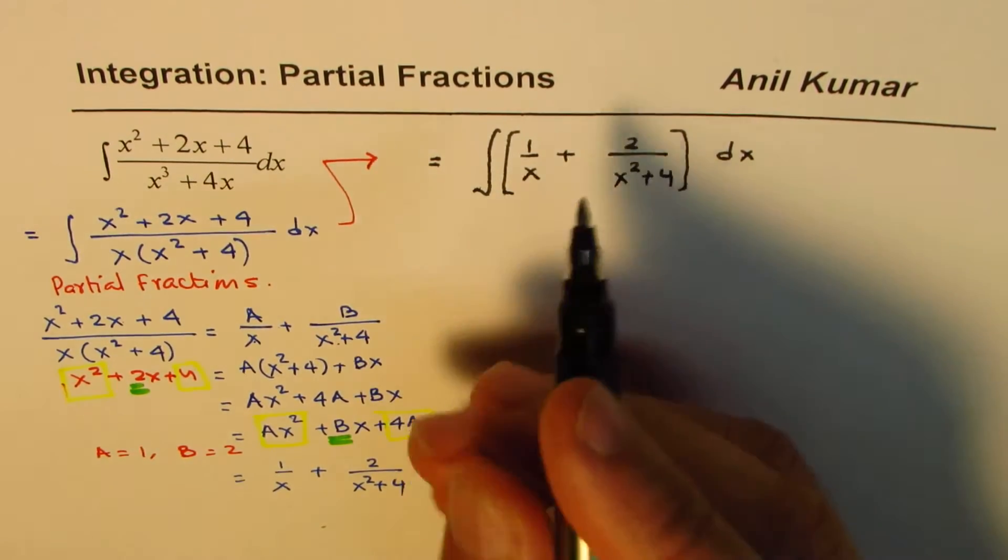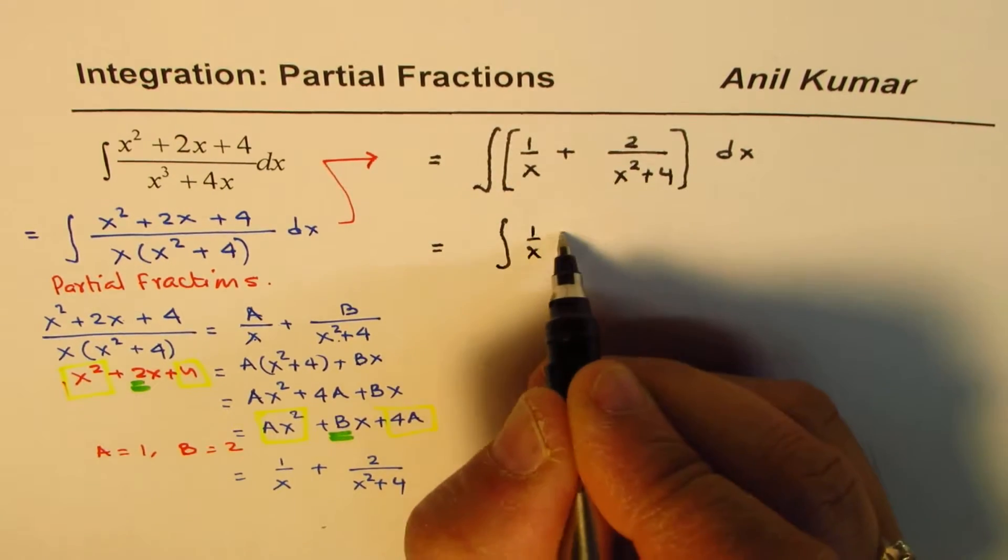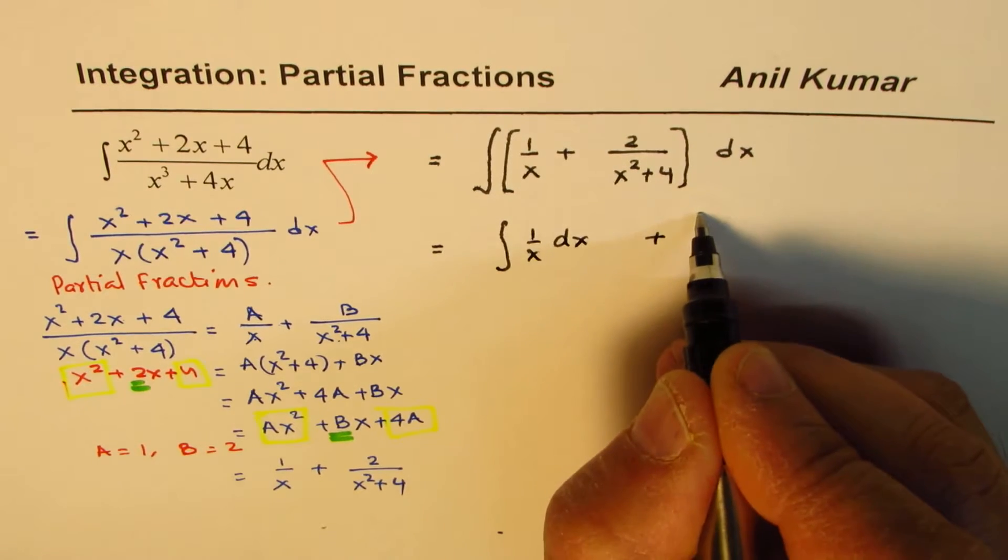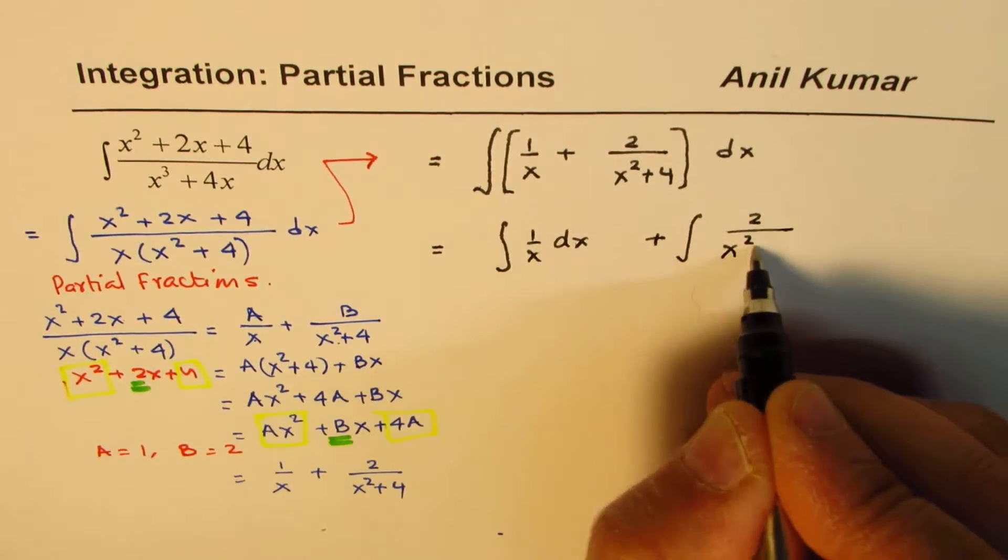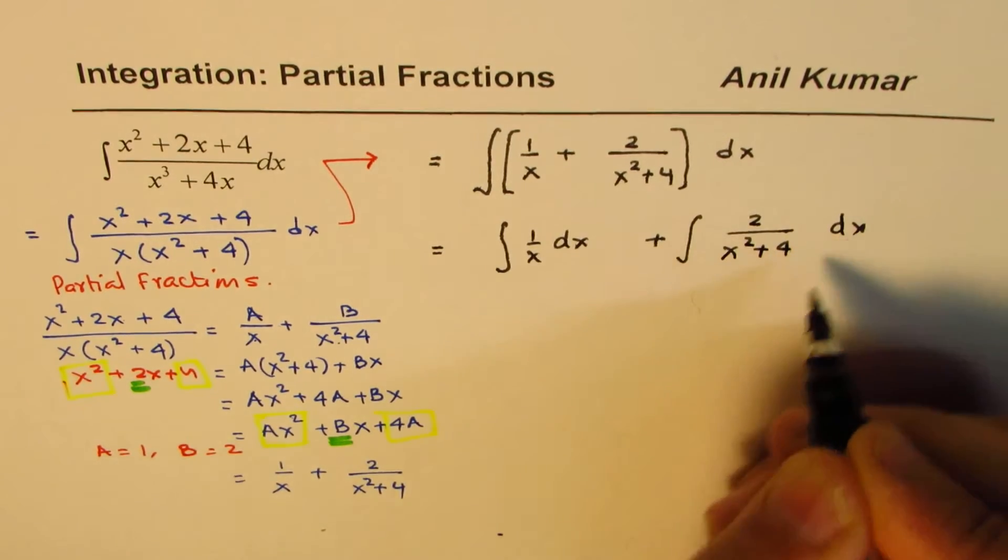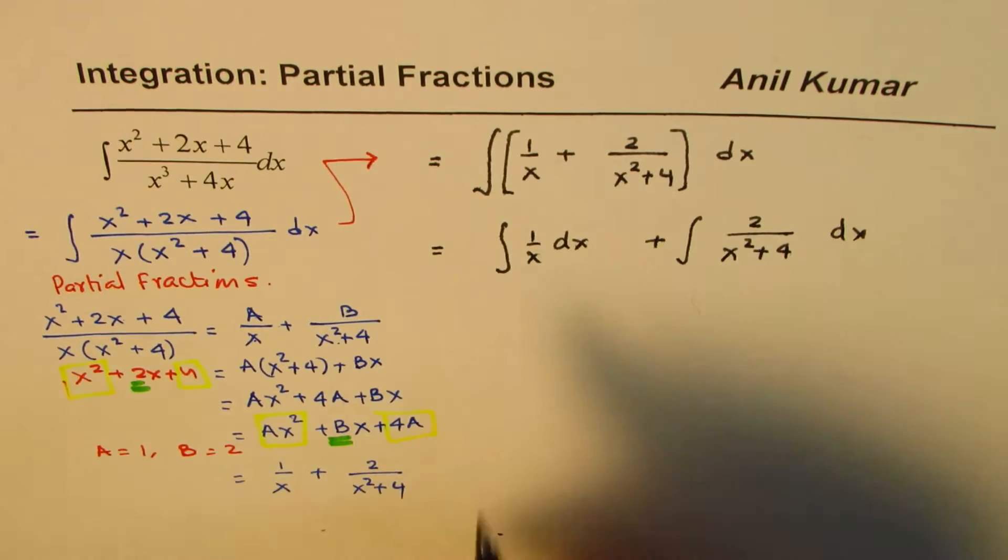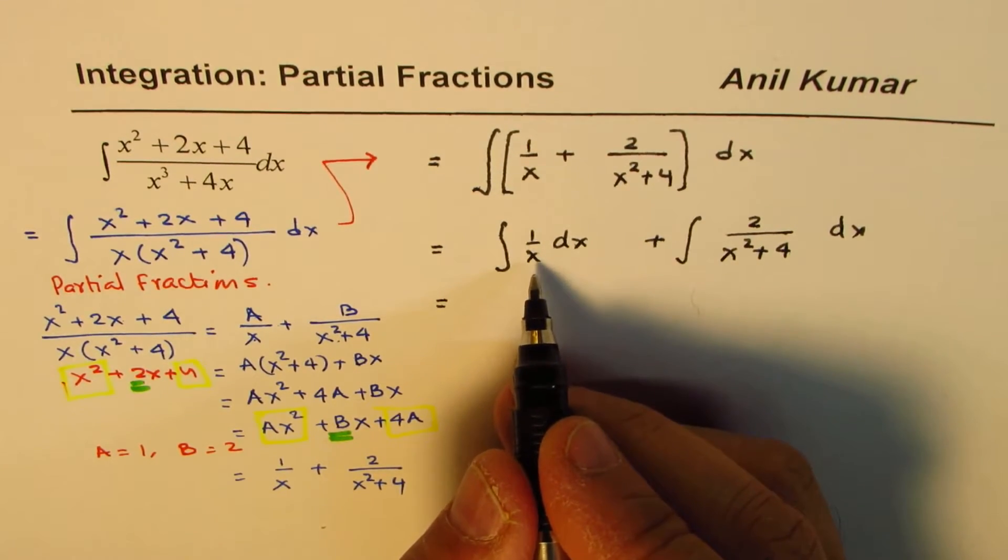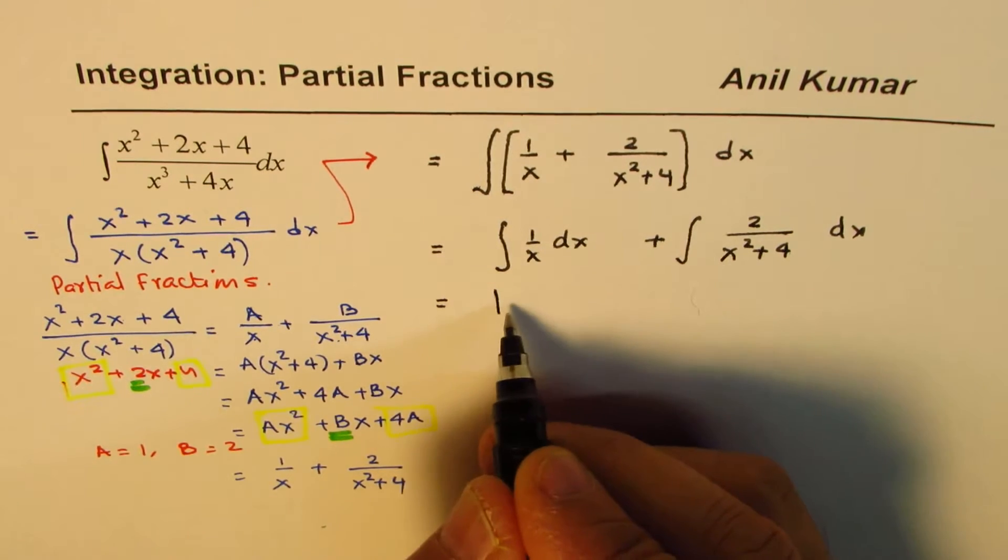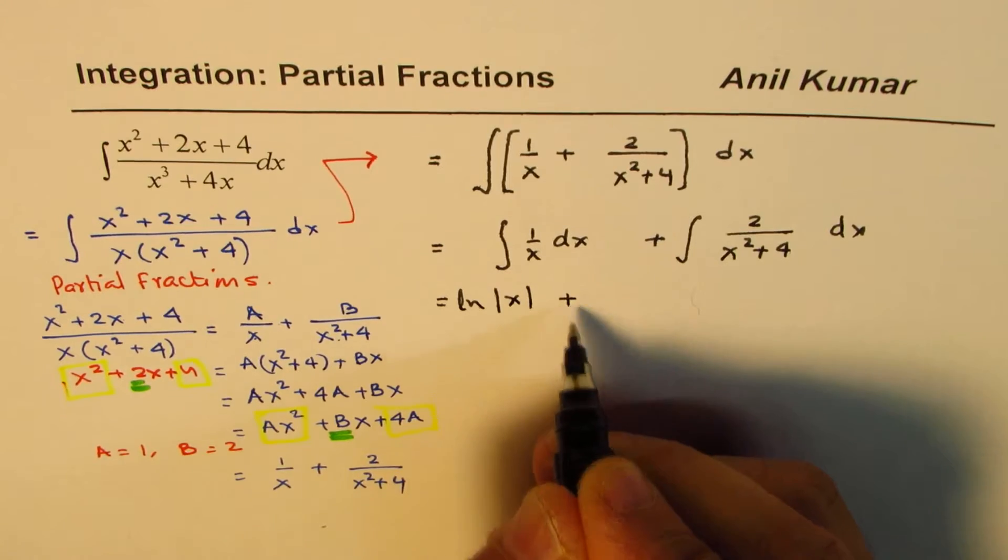Now it's simple to find the integral of this. So we have integral of 1 over x dx plus integral of 2 over x squared plus 4 dx. So I hope you remember the formula here, both formulas. We'll just apply them now. So we get here, this is ln x. So what we get here is ln absolute value of x plus, now for this,